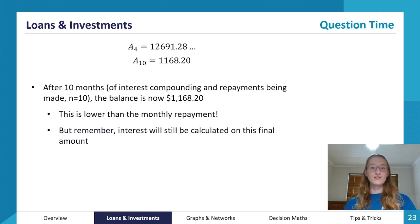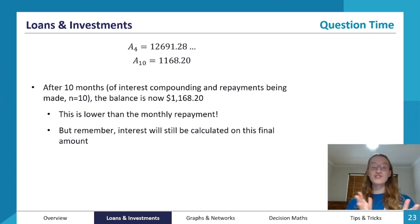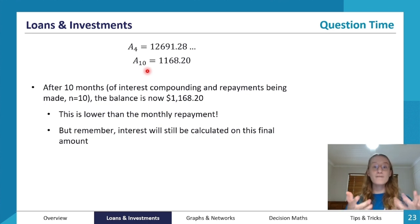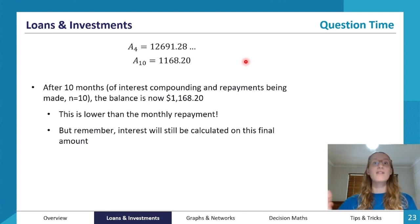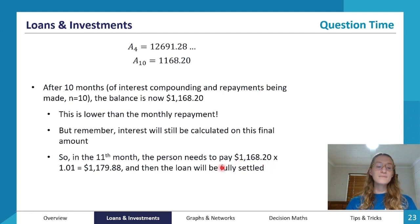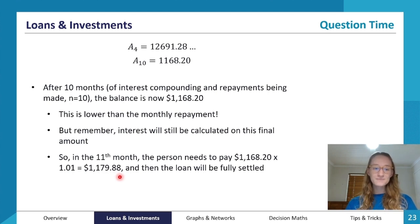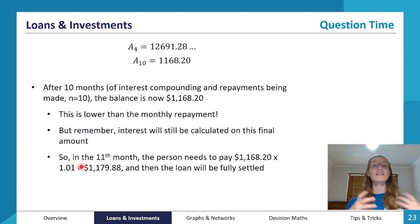A step many people forget: we must still apply interest to the final remaining balance, because the bank won't waive interest on the last period. So A₁₁ = $1,168.20 × 1.01, which gives $1,179.88 still owing. The final adjusted repayment is therefore $1,179.88 — not the full $2,000 — because that's all that remains on the loan in month 11.